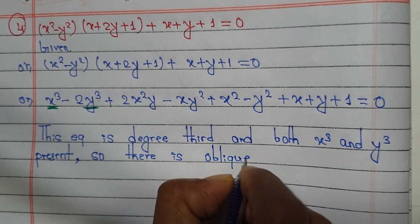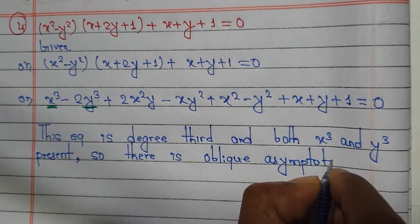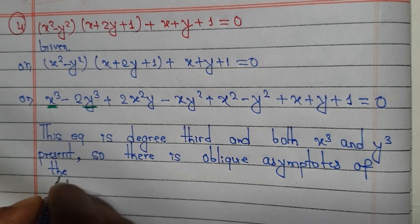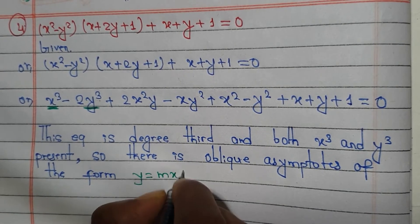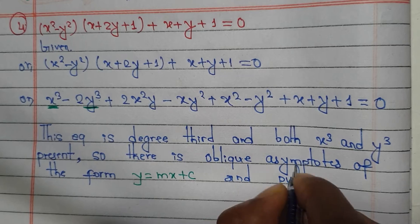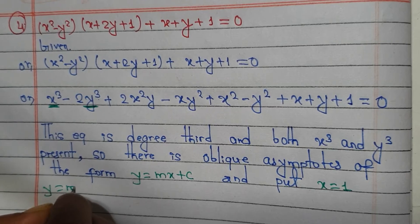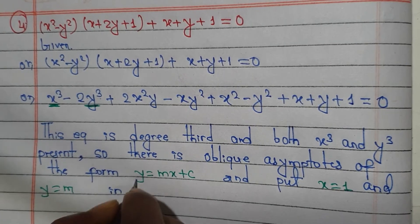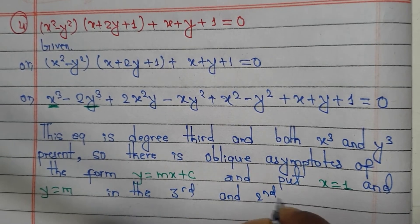There are asymptotes of the form y equals mx plus c. Put x equal to 1 and put y equal to m. We work in the third and second degree terms.